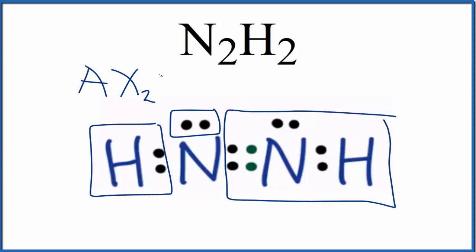And then E, that would be the lone pairs, and we have one lone pair. So we have this AX2E. If you look that up, you'd see that this is a bent molecular geometry and the bond angles for this would be approximately 120 degrees.